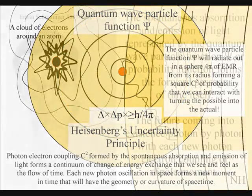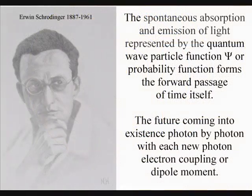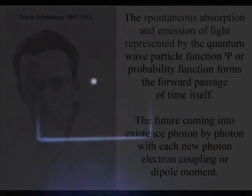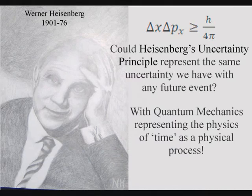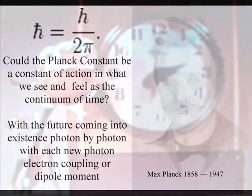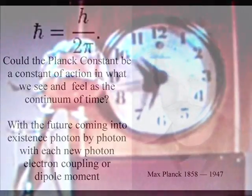At the smallest level of this process, this uncertainty is seen as Heisenberg's uncertainty principle, with the Planck constant being a constant of action in the dynamics of space and time.